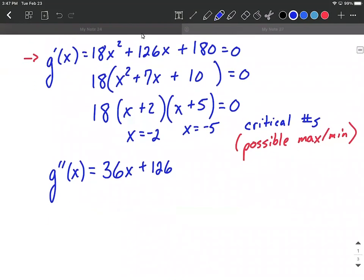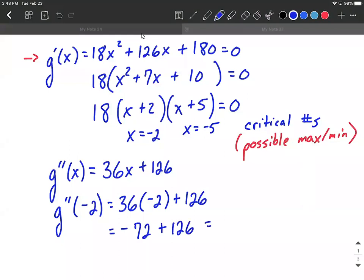To test each one of these x values that we listed up above, negative 2 and negative 5, what we're going to do is plug them into the second derivative. So we'll substitute negative 2 in for each of our x's. So we get 36 multiplied by negative 2 plus 126, which will be negative 72 plus 126, which will equal positive 54.